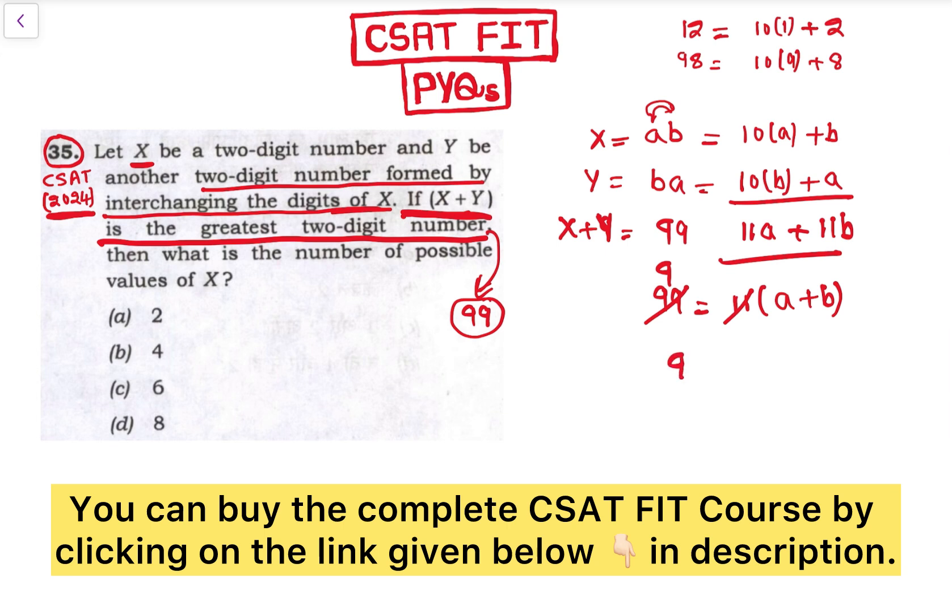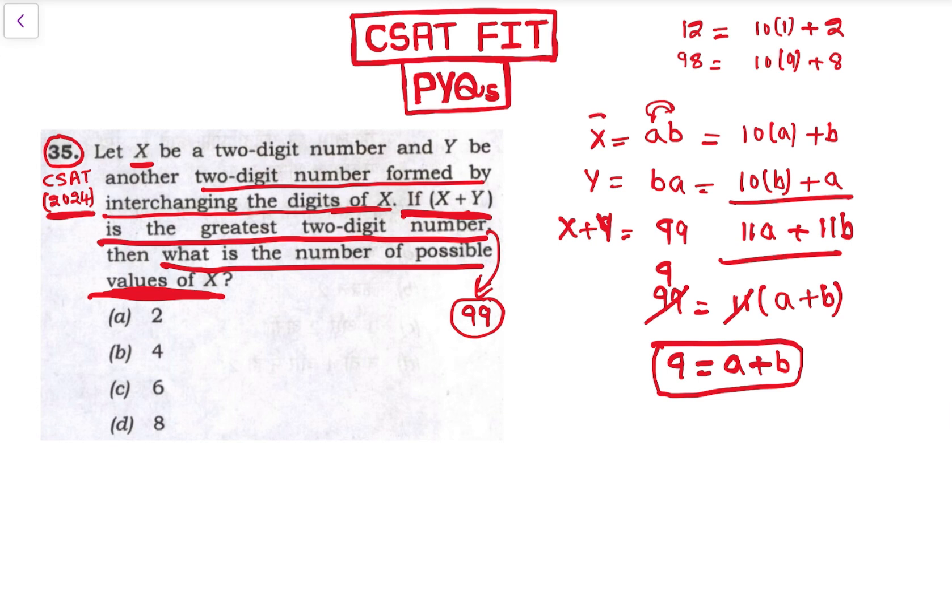So 11 nines are 99, so 9 is equal to a plus b. Now, what is the number of possible values of X? So X is equal to ab here. Now we got a plus b.